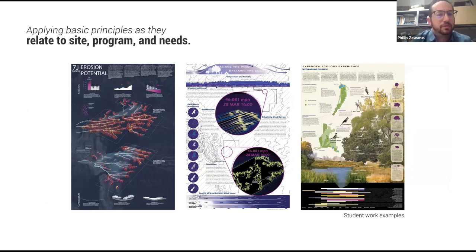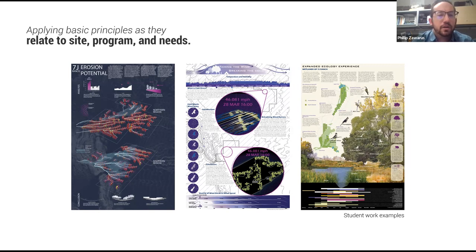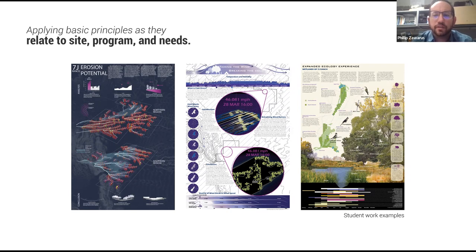Here you can start to see some examples of student work from our studios, where we utilize this process of aggregating different data to look at environmental systems on a project site. Students can get a much more in-depth understanding of erosion potential by looking at all the variables that affect it — such as vegetation, slope, and soil textures — looking at outdoor comfort using existing vegetation, wind patterns, and climate data, and even wildlife habitat to understand how different species feed, nest, or breed in different plant communities.